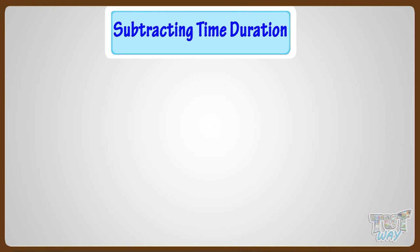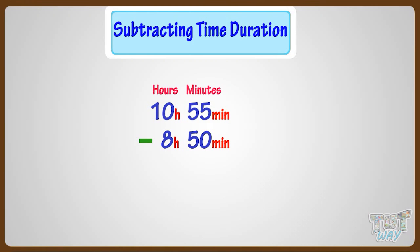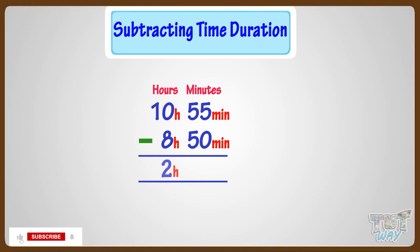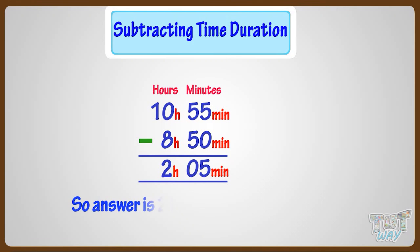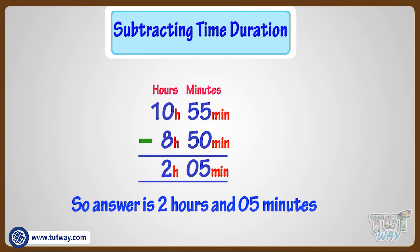Now let's take another example. We have to subtract 8 hours and 50 minutes from 10 hours and 55 minutes. Subtracting hours from hours, that is subtracting 8 from 10, we are left with 2 hours. Subtracting minutes from minutes, that is subtracting 50 minutes from 55 minutes, we are left with 5 minutes. So the answer is 2 hours 5 minutes.